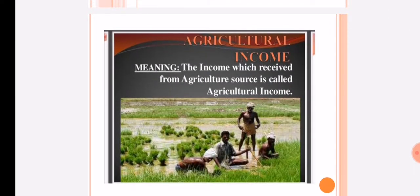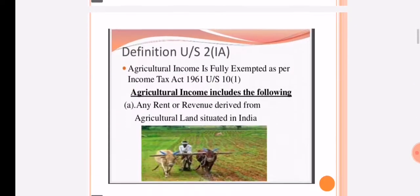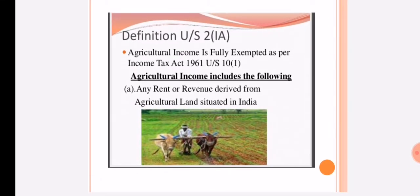Agricultural Income — the basic meaning is the income which is received from an agricultural source is called Agricultural Income. The definition is under Section 2(1A). Agricultural Income is fully exempted as per Income Tax Act 1961 under Section 10(1), because a low level of income is received from agricultural sources.